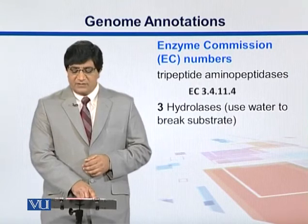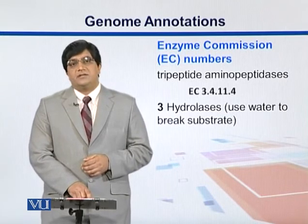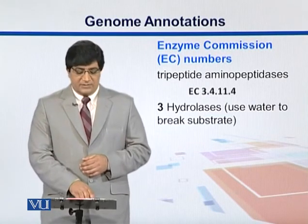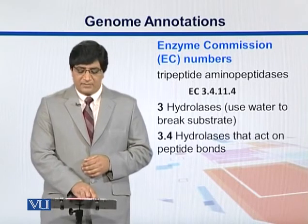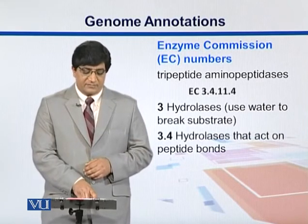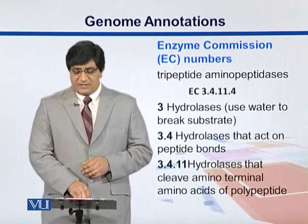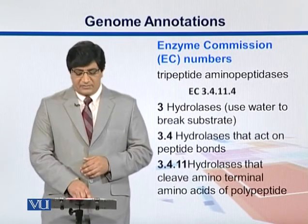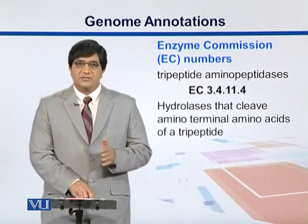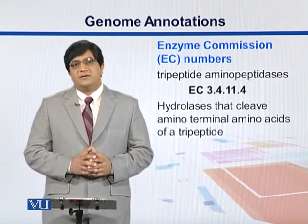For example, EC 3.4.11.4 — the first digit, 3, means it is a hydrolase, an enzyme that uses water to break something. 3.4 means it is a hydrolase that acts on peptide bonds, breaking some proteins. 3.4.11 means it is a hydrolase that cleaves the amino-terminal amino acids on a polypeptide, and the last digit specifies that these are hydrolases that cleave the amino-terminal amino acid of a tripeptide.